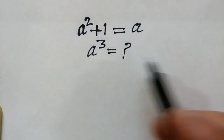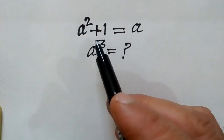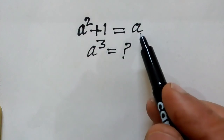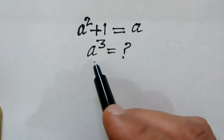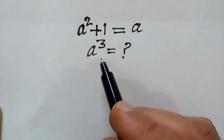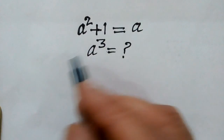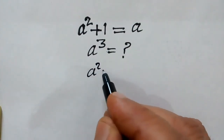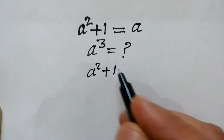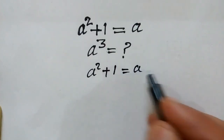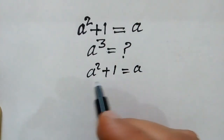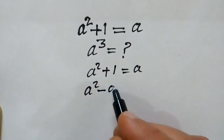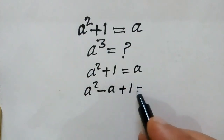Hi friends, we have given a squared plus 1 is equal to a. We have to find out the value of a cube. Since a squared plus 1 equals a, we rearrange to get a squared minus a plus 1 is equal to 0.